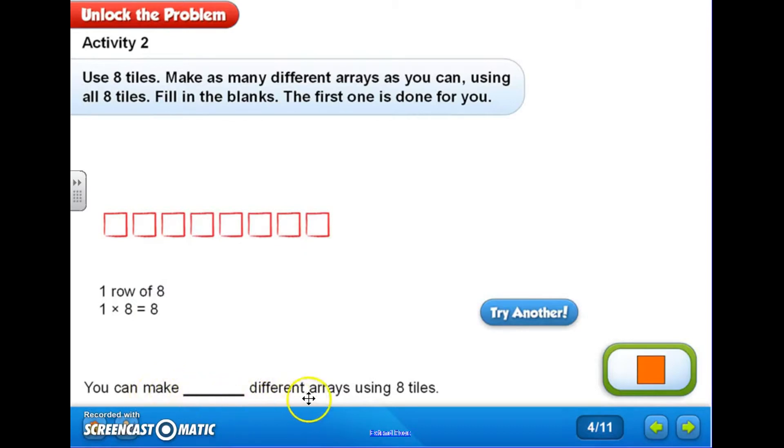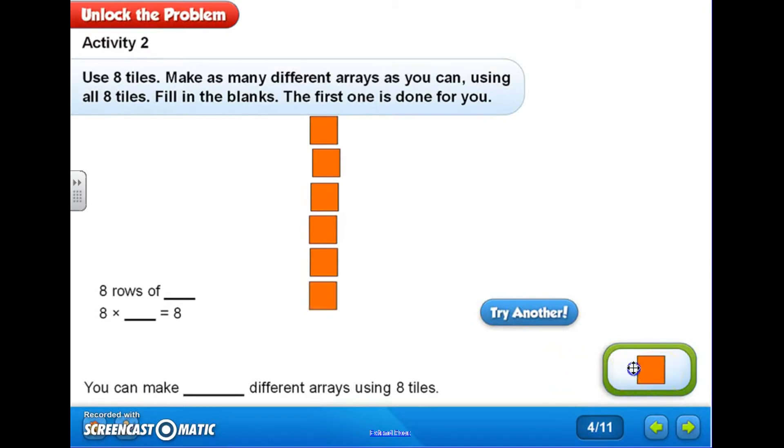But let's see if there's different ways that I could make these tiles. Let's try another one. How about if I do eight rows? Let's see what that would come out to be. One, two, three, four, five, six, seven, eight. Well, if I only have a total of eight tiles, I guess that's going to give me eight rows of one, one in each row. So eight rows of one is going to match the number sentence eight times one equals eight.